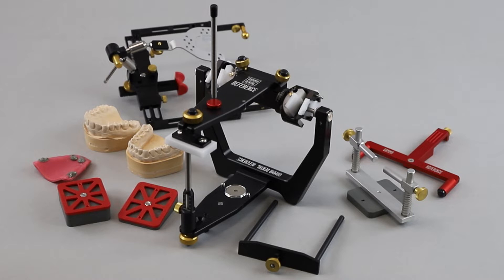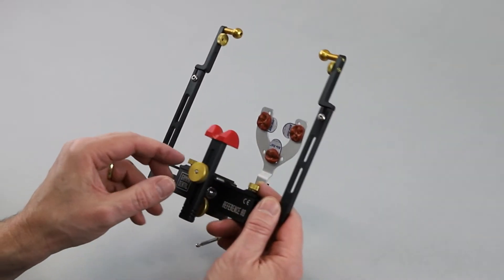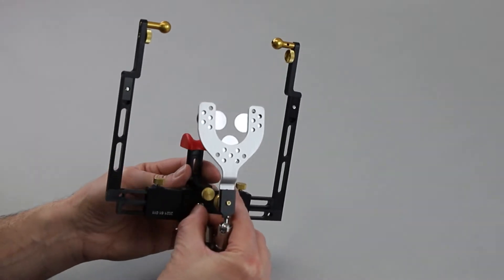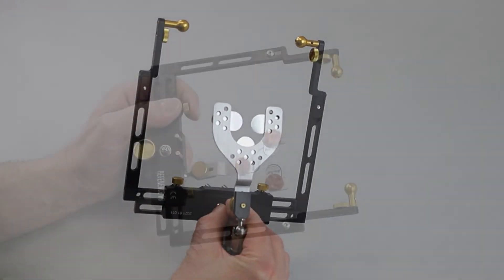After removing the face bow from the patient, dismount the nasion support and the porus supports, thus making the mounting plates accessible.